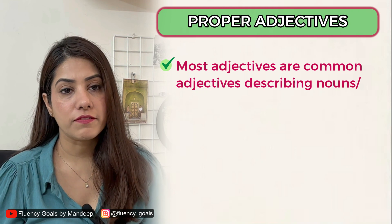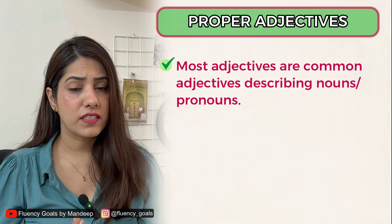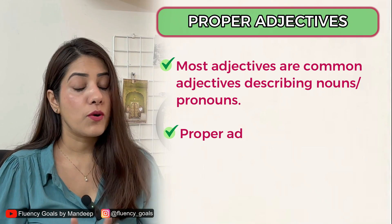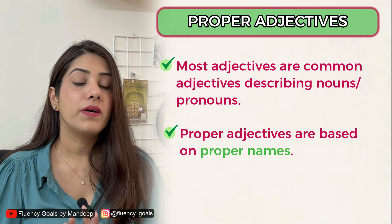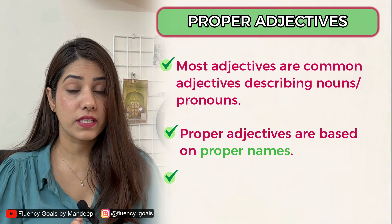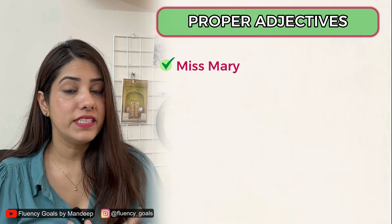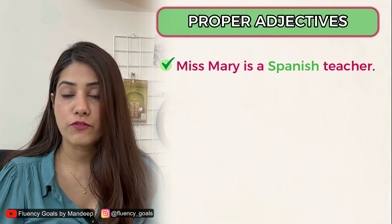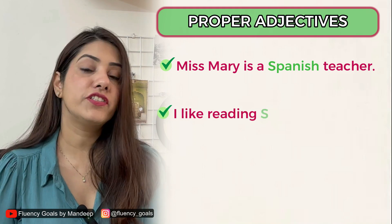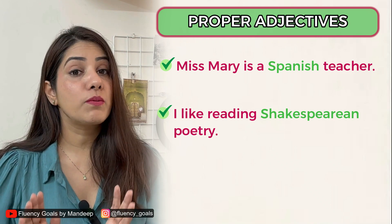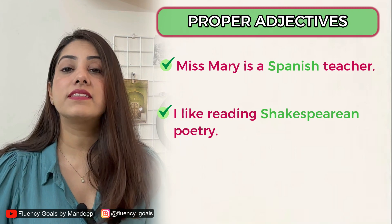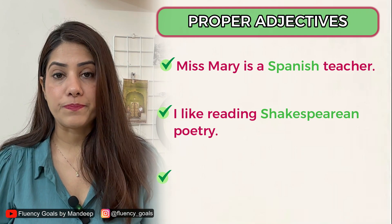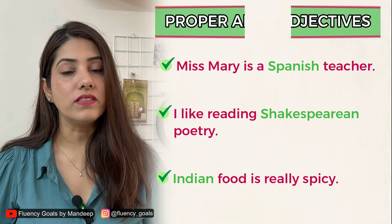Most adjectives are common adjectives describing people, things, etc. — like tall, short, black. Proper adjectives also describe people and things, but they are based on proper names and therefore need to be capitalized. For example: 'Miss Mary is a Spanish teacher' — 'Spanish' is derived from the proper noun 'Spain'. 'I like reading Shakespearean poetry' — 'Shakespearean' is derived from the proper noun 'Shakespeare'. 'Indian food is really spicy' — 'Indian' is a proper adjective describing food.